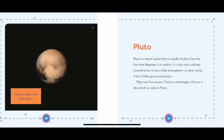Pluto. Pluto is a dwarf planet that is usually further from the Sun than Neptune. It is reddish. It is also very cold and covered in ice. It has a little atmosphere. In other words, it has a little gas surrounding it. Pluto has five moons. Charon is the largest. Charon is about half as wide as Pluto. Pluto is smaller than Earth's moon.